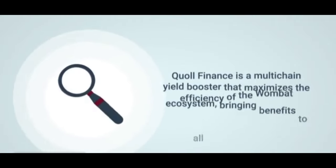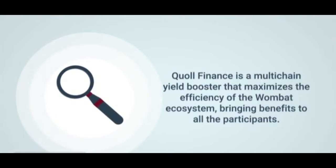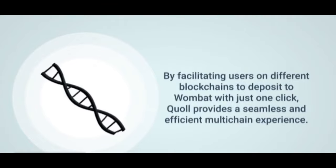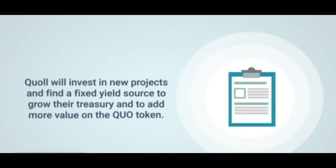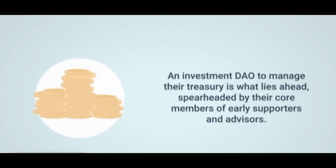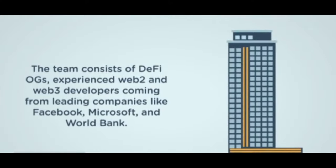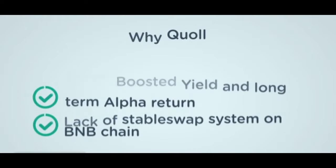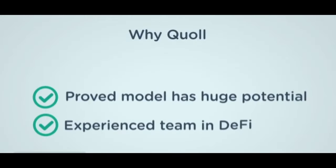Qual Finance is a multi-chain yield booster that maximizes the efficiency of the Wombat ecosystem, bringing benefits to all participants by facilitating users on different blockchains to deposit to Wombat with just one click. Qual provides a seamless and efficient multi-chain experience and will invest in new projects to find fixed yield sources to grow their treasury and add more value to the QUO token. The team consists of DeFi OGs and experienced Web2 and Web3 developers from leading companies like Facebook, Microsoft, and the World Bank. Key reasons to use Qual: stable boosted yield and long-term alpha return, lack of a stable swap system on BNB chain, a proven model with huge potential, and an experienced team in DeFi.